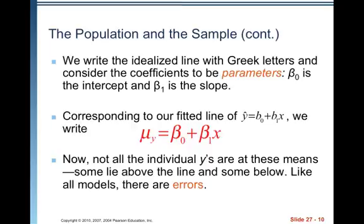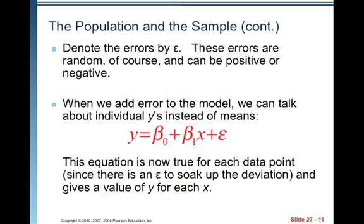Like all models, there are errors. Denote the errors by a little epsilon. These errors are random, of course, and can be positive or negative.